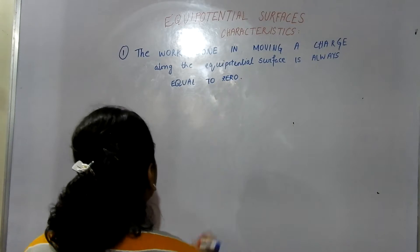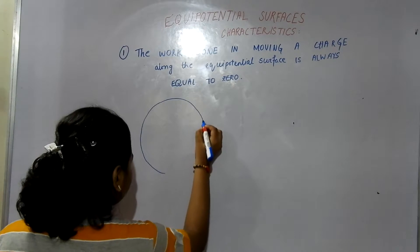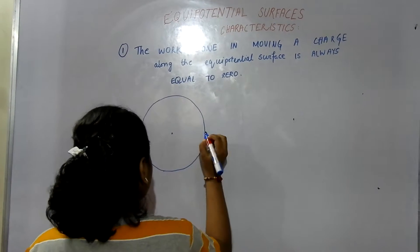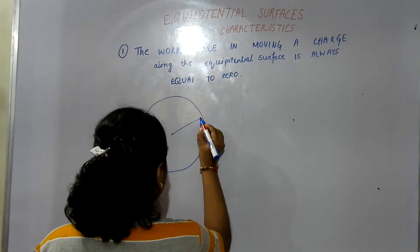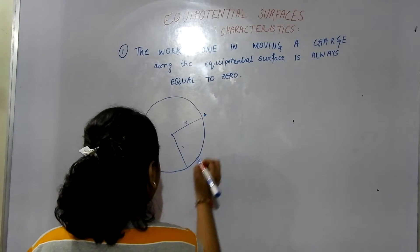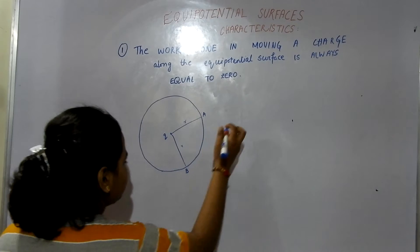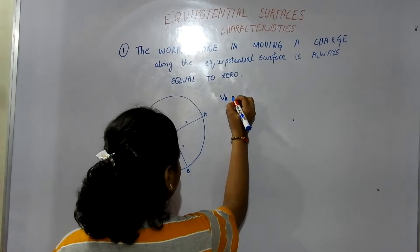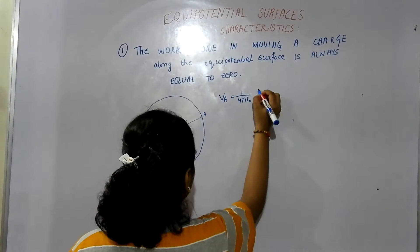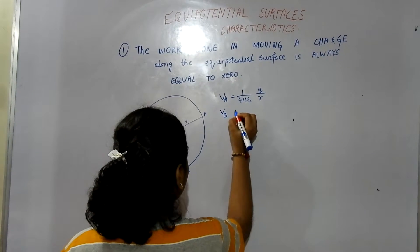For example, let me take an equipotential surface like this. A circle, as I have already told you, is an equipotential surface. This is the center of the circle and the radius is the same in all directions. So we have point A and point B, and a point charge Q is placed at the center. Now we will find out the potential at position A, that is 1 by 4 pi epsilon naught, Q is the charge, R is the distance between the charge and the point, so Q by R.